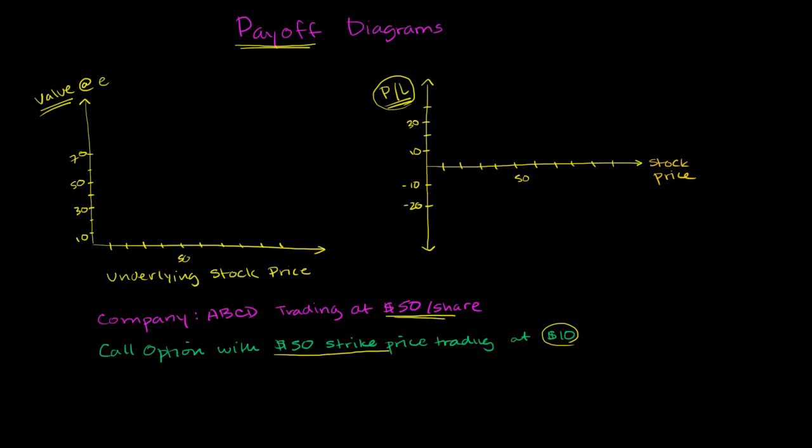So what is the value of this option at expiration? So if the stock is worth less than $50, the owner wouldn't execute it. They wouldn't exercise the option. So the option would be worthless. They would just let it expire. No reason to actually exercise the option.